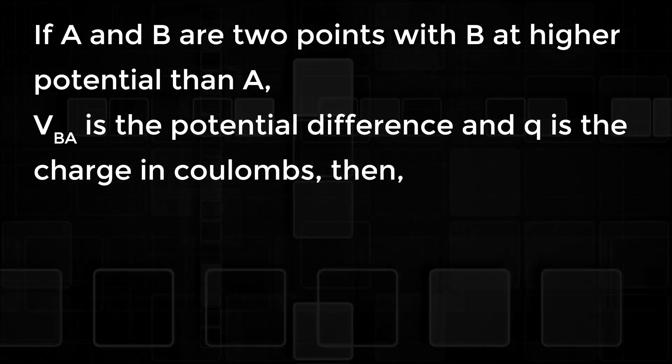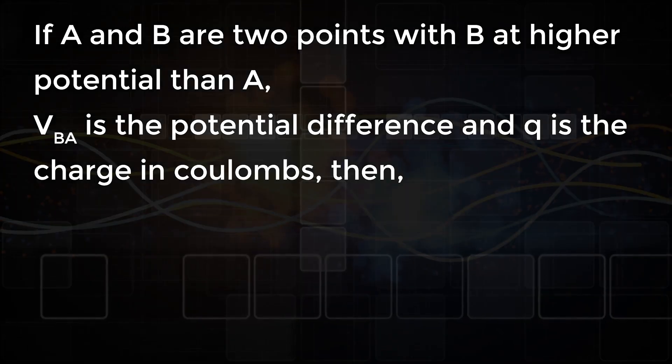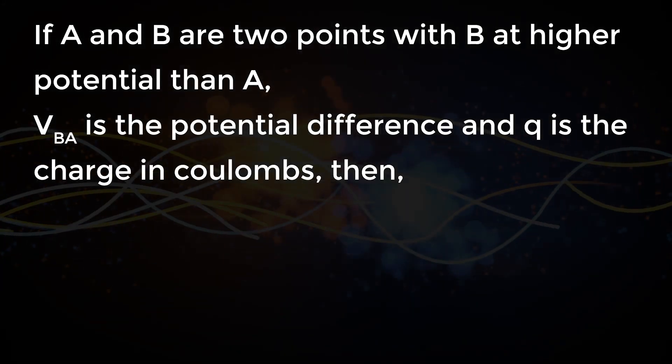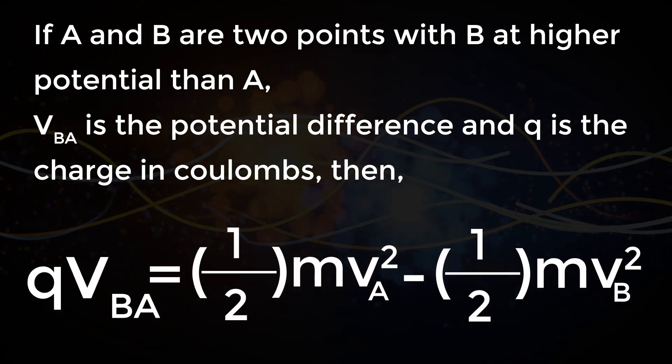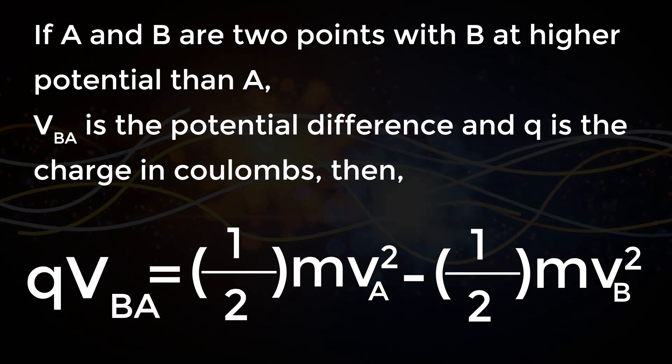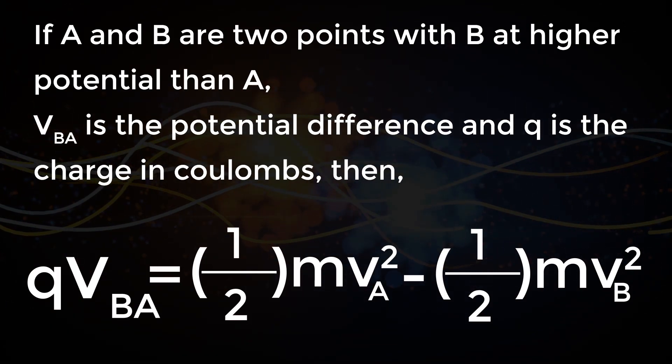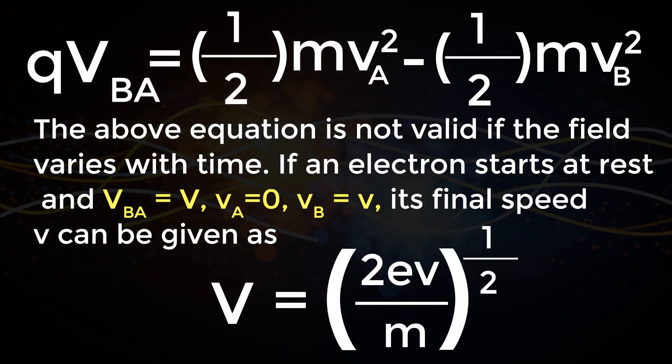If A and B are two points with B at higher potential than A, VBA is the potential difference and q is the charge in coulombs. Then q times VBA equals one-half times m times vA squared minus one-half times m times vB squared. The above equation is not valid if the field varies with time.